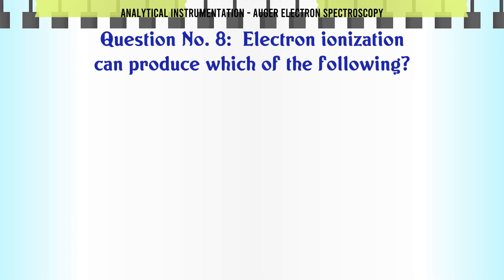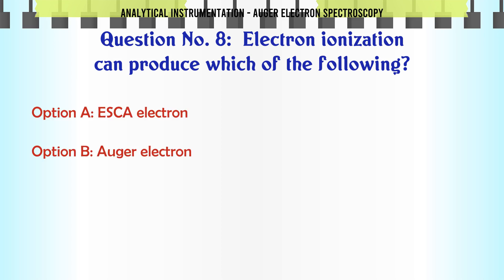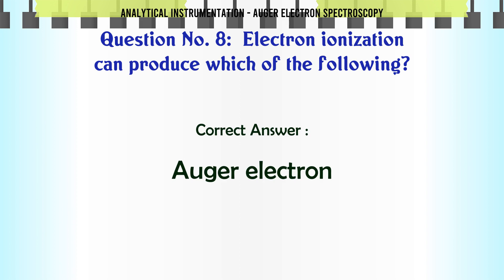Electron ionization can produce which of the following? A. 2S CA electron. B. Auger electron. C. Ion. D. Photon. The correct answer is Auger electron.